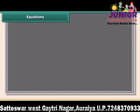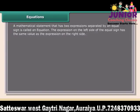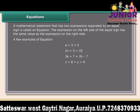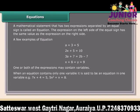A mathematical statement that has two expressions separated by an equal sign is called an equation. The expression on the left side of the equal sign has the same value as the expression on the right side. One or both of the expressions may contain variables. When an equation contains only one variable, it is said to be an equation in one variable.